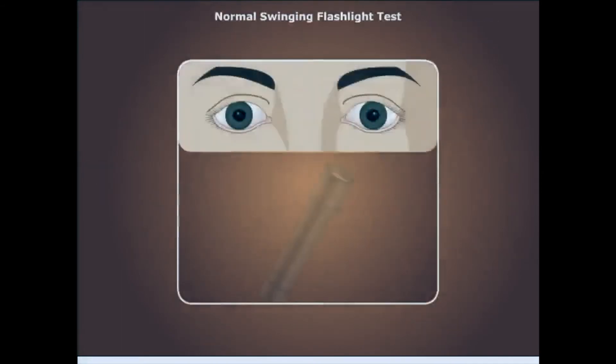The normal swinging flashlight test will now be reviewed. Shining light in one eye results in constriction of the pupil in the same ipsilateral eye. This is known as the direct light reflex. However, it also causes the constriction of the pupil in the contralateral eye, which is known as the consensual light reflex. This is due to visual axons in each optic tract projecting to both Edinger-Westphal nuclei bilaterally, as explained previously.